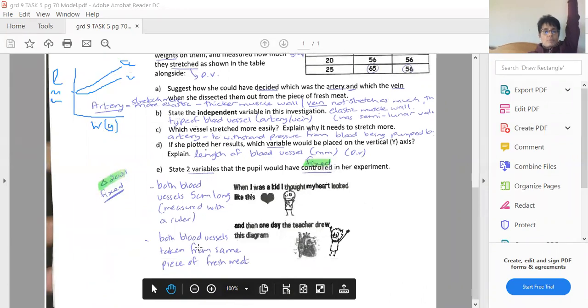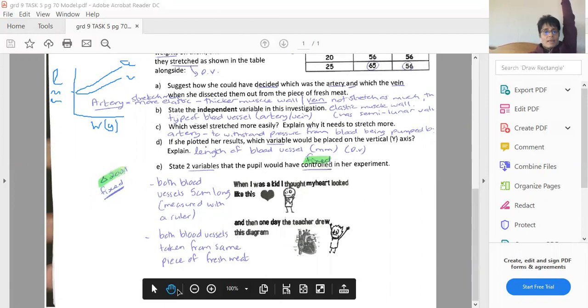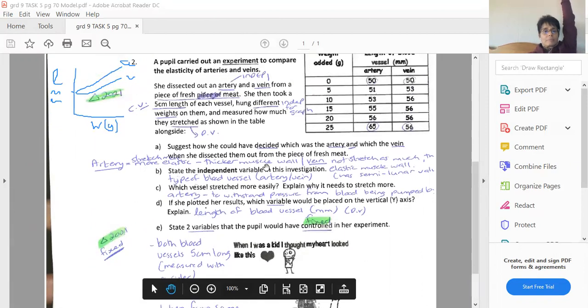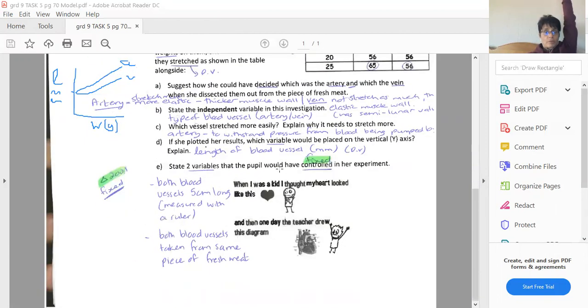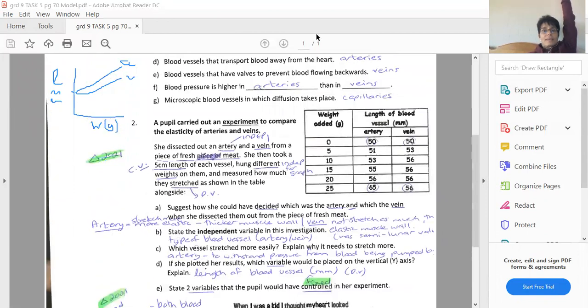Also, both blood vessels were taken from the same piece of fresh meat. They're not older or younger. They're not from different animals. Okay. And those are the two main fixed variables or controlled variables. All right. Now the next one.